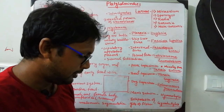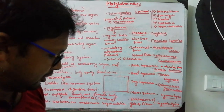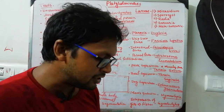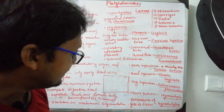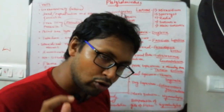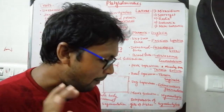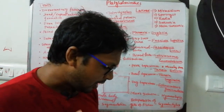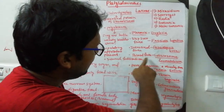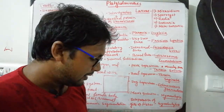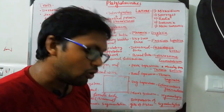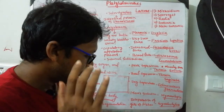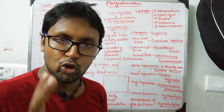Opisthorchis sinensis is the Chinese liver fluke, living in the human gallbladder. Like blood flukes, they also require a snail, but not Oncomelania - here it is Bithynia snail. So the Chinese liver fluke requires two hosts: human and Bithynia snail.